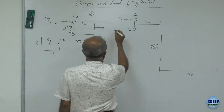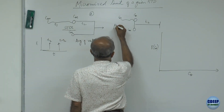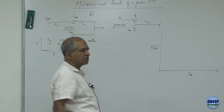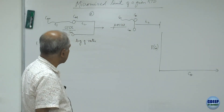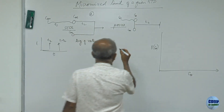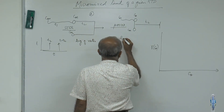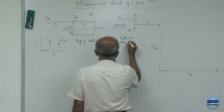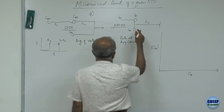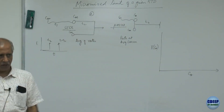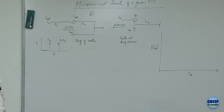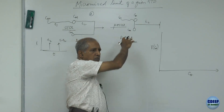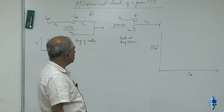In the micromixed state, or the early mixing case, or the micro fluid case, the rate is at the average concentration. CA1 mixes with CA0 and the concentrations get averaged, and therefore you get a rate per unit volume which is at that average concentration.